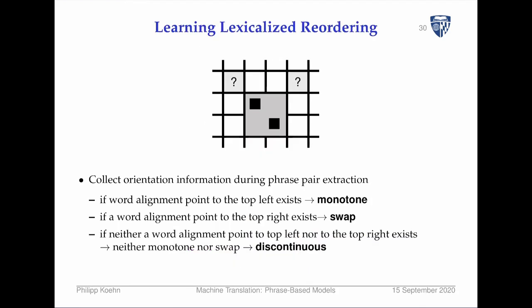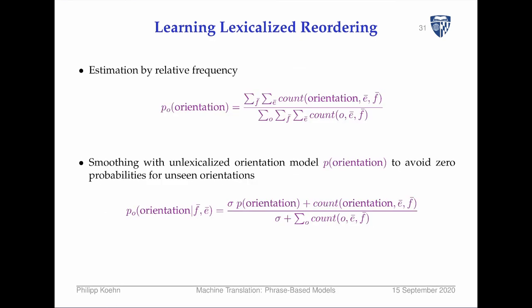How do you learn this? It's pretty straightforward: whenever you extract a phrase pair during training, all you have to check is whether the alignment point to the top left is present — if so, this is a monotone occurrence of this phrase pair. If there's an alignment point up and to the right, it's a swap. If neither of these, then it's discontinuous.